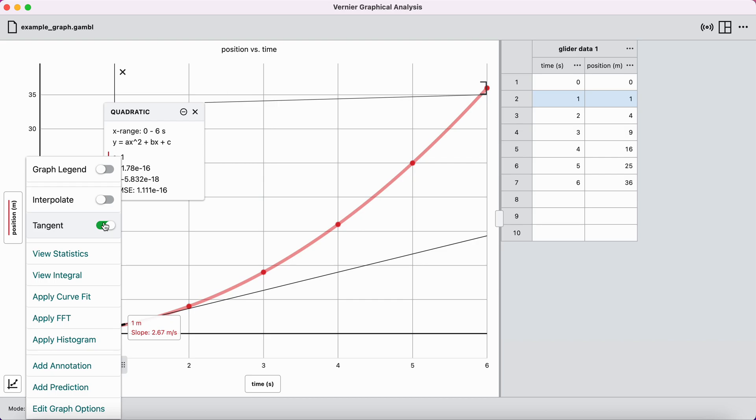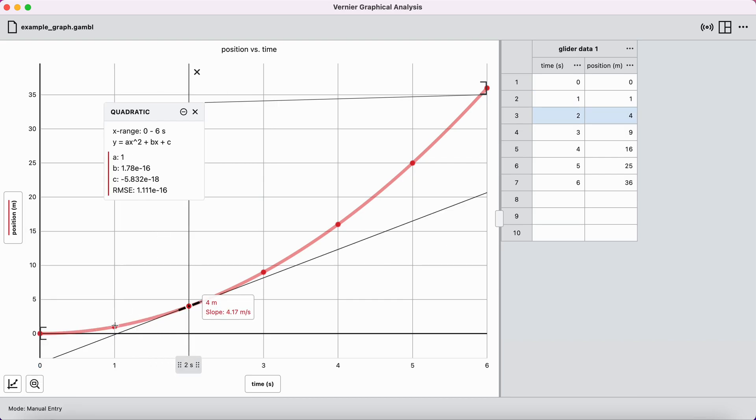There we go. And if I click out of this now, I can see that they've drawn a tangent line at 1 second and it extends out pretty far. I can see the slope of this tangent line is 2.67 meters per second. It computes the number value and it tells you the units. The way it computes this unit is it takes your y-axis unit meters and divides by your x-axis unit seconds.